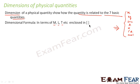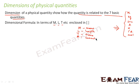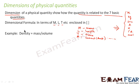The dimensional formula is denoted in terms of M, L, T, etc., enclosed in square brackets. M is used to denote mass, L for length, T for time, A for current (ampere), and so on. Let us take an example — for density, we know that density equals mass divided by volume.